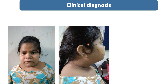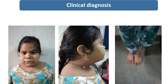The child is also having low-set ears — when you draw a horizontal line from the outer canthus, you can see the ears are low-set. There is also hyperpigmentation present in the nape of the neck, which is acanthosis nigricans. The child is also having small hands and feet, and the toes are small.